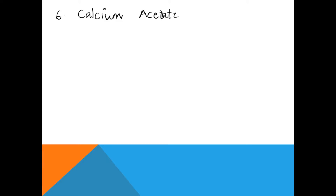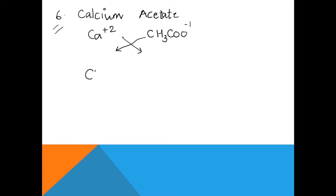Now one very interesting point: in the crisscross method the positive portion is always written first and the negative one later. But remember, there is an exception for the radical called acetate — it comes from acetic acid. The acetate radical is written first while forming the chemical formula. Acetate is CH₃COO⁻¹. So for calcium acetate, we write the acetate radical first: (CH₃COO)₂Ca — calcium's valency of 2 touches the feet of acetate.